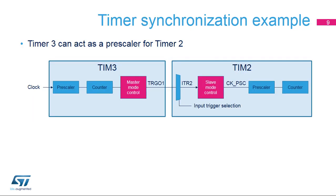This slide shows a simple example of timer synchronization. Timer 3 is used as the master timer and can reset, start, stop, or clock Timer 2 configured in slave mode. In this example, Timer 3 is clocking Timer 2 so that it acts as a prescaler for Timer 2.